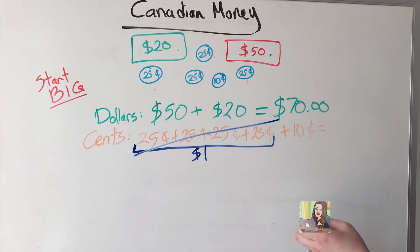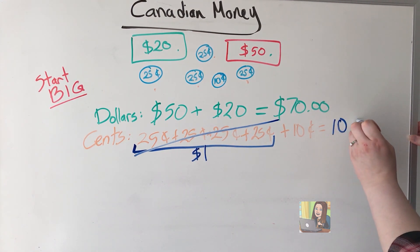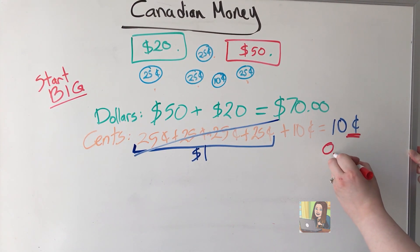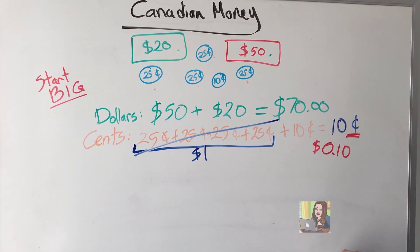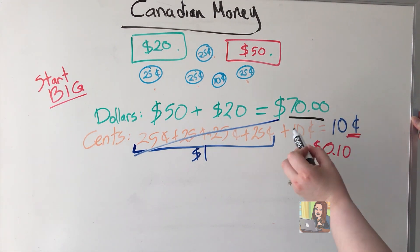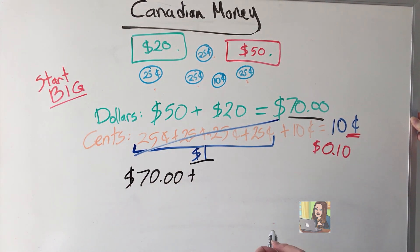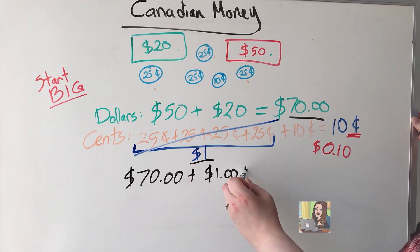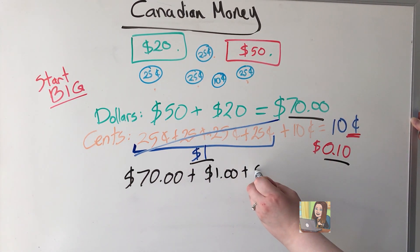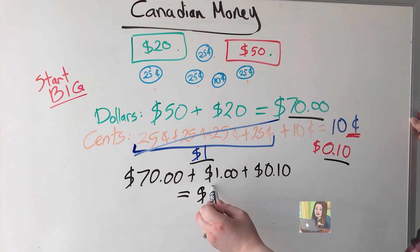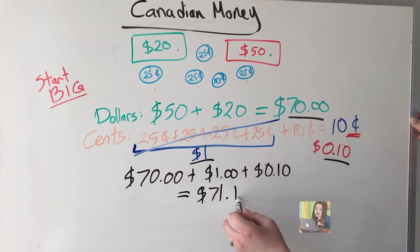So I'll set that aside and just count up the 10 cents remaining. I have 10 cents, which as a decimal is $0.10. The last thing I need to do is total up all my amounts: $70 here, plus the one dollar I found in the quarters, plus the 10 cents left over — 70 plus 1 is $71, giving me $71.10.